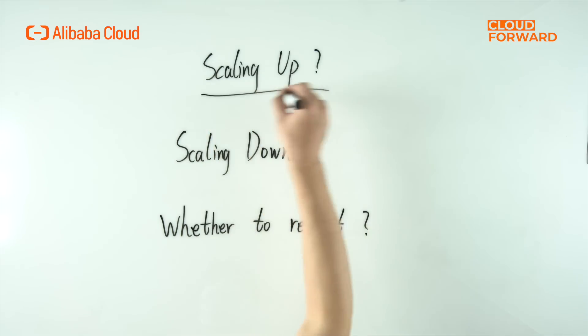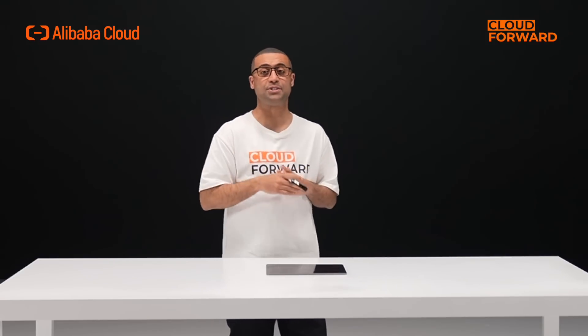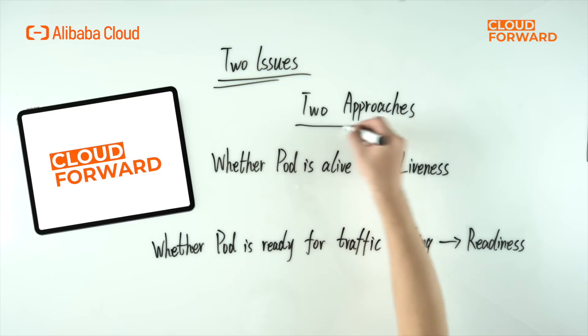Health checks are an important means for SAE to determine whether your container is functioning normally. In non-micro-service scenarios, the mainstream architecture has some instances where the platform manages their lifecycle — scaling up, scaling down, and whether to start — in addition to a load balancer in front, where SAE instances serve as its back-end servers. There are two critical issues: when do instances need to be restarted, and when can they be mounted to the load balancer? These correspond to two key approaches: liveness and readiness. Readiness determines when the container should be mounted on the load balancer, and liveness determines how to identify whether the container is alive and needs to be restarted. They both support three types of examination — HTTP, TCP, and command execution — as well as three critical parameters: delay time, timeout time, and examine period. Health checks provide an accurate grasp of the health status of instances.